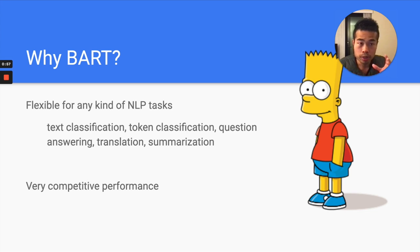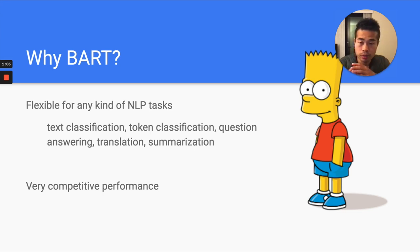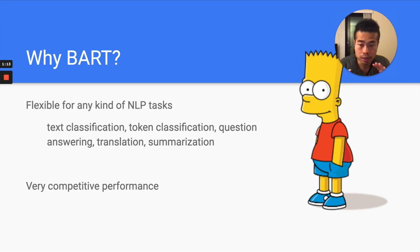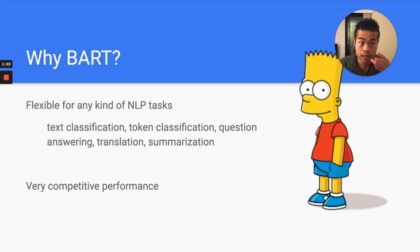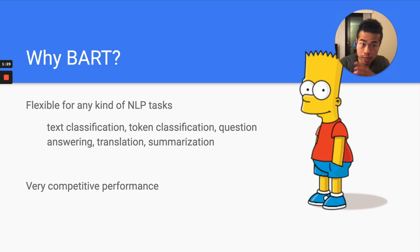BART is a model that is very similar to the transformer. Basically it's a transformer architecture, encoder and decoder. That's why it can be very easily applied to any kind of text generation task. And it's very competitive — its performance is close to RoBERTa in terms of text generation, token classification, and question answering.